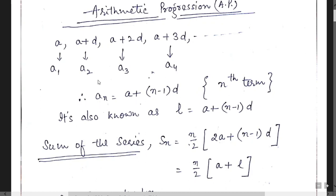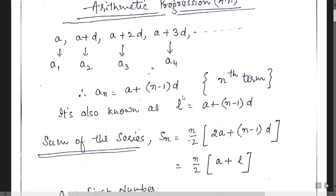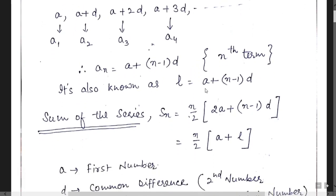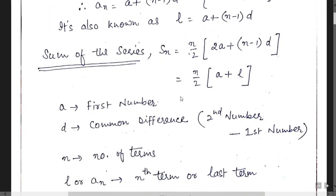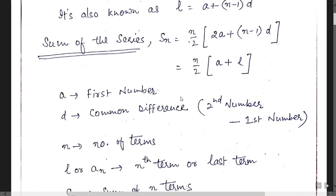With the help of this formula, we can find out any term of the series. It is also known as L, or the last term of the series. If we have to find the sum of the series, we can use this formula: n over 2 times (2a plus n minus 1 into d), where a is the first term, d is the common difference, and n is the number of terms whose sum is to be calculated.